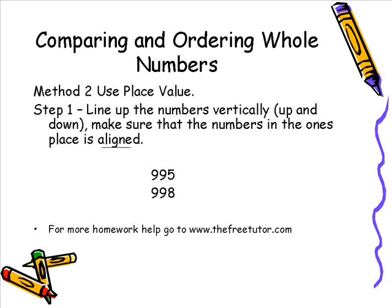Step number one is to line the numbers up vertically or up and down. This will simply make it easier to compare the numbers. Make sure that the numbers in the ones place or the ones digits are aligned correctly. As you can see here in this picture we have 995 and underneath it 998. Notice the two digits in the ones place are aligned correctly.